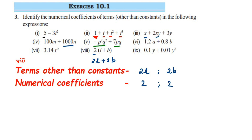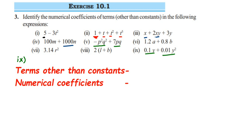The last one, ninth problem: we have 0.1y and 0.01y square. Two terms are present. The numerical coefficient for the first term is 0.1, and for the second term it is 0.01. That's it — I hope it's clear how to find the numerical coefficient. If you have any questions or doubts, you can drop a comment. Thank you so much for watching.